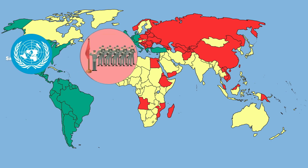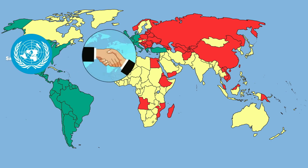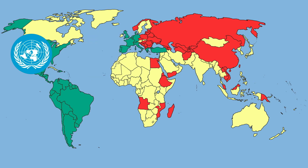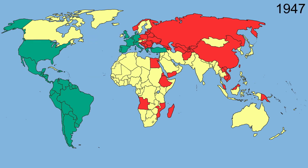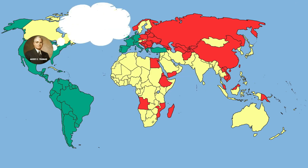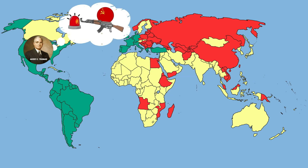In 1947, the Truman Doctrine was born, marking the beginning of the Cold War. According to the doctrine, the United States will support any country they see is threatened by communism.